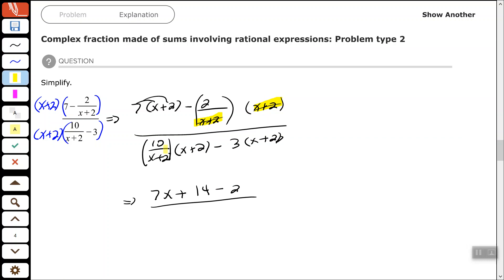Then in my denominator, again, the 10 over x plus 2 times x plus 2, the x plus 2s cancel out. So that leaves me with 10 minus, well, I have to use distributed property, I have to distribute that negative 3, so minus 3x minus 6.